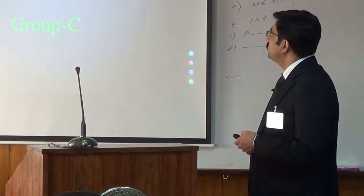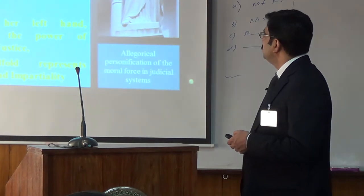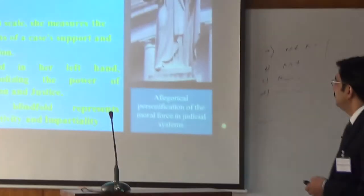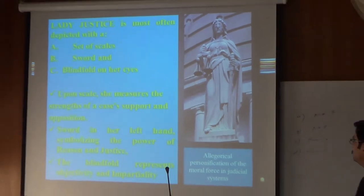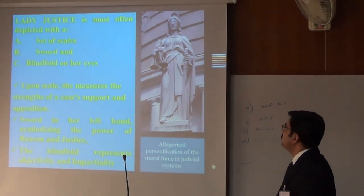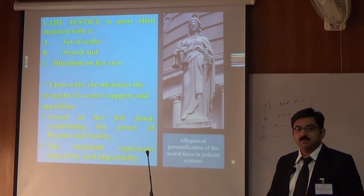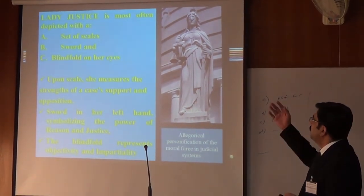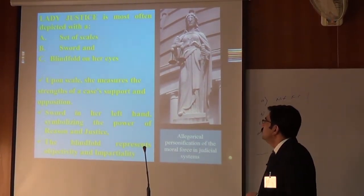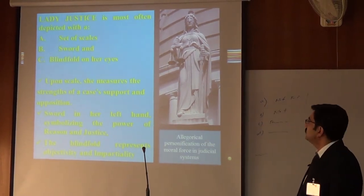First of all, we come to our topic. Here is Lady Justice — an allegorical personification of the moral forces in the spiritual and legal system. Lady Justice symbolizes three things she is holding: a set of scales, a sword, and a blindfold on her eyes.